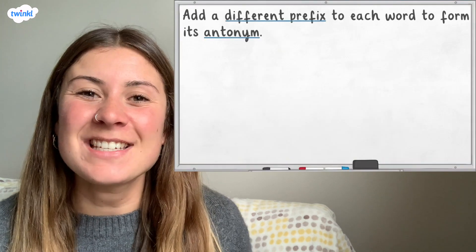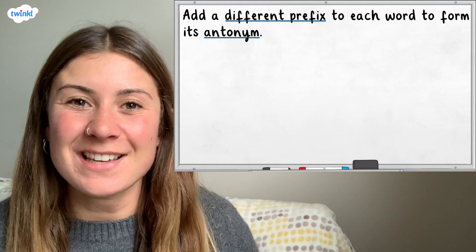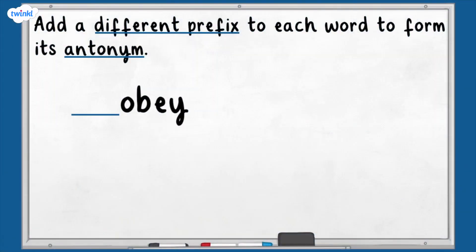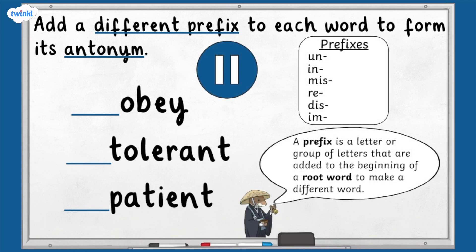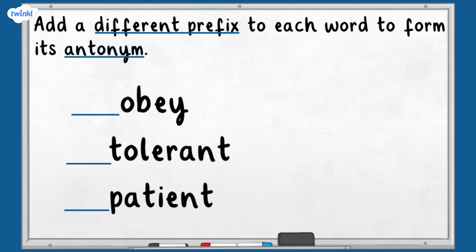Here's the next question — see if you can work out the correct answers. Add a different prefix to each word to form its antonym: obey, tolerant, patient. Pause the video here and have a go at answering the question. You might like to use a whiteboard or a piece of paper, or you might just want to say your answer out loud. Top tip: try saying the answers out loud to see if they sound right. So let's look at the answers. Obey becomes disobey. Tolerant becomes intolerant. Patient becomes impatient. Give yourself a pat on the back if you got those right.